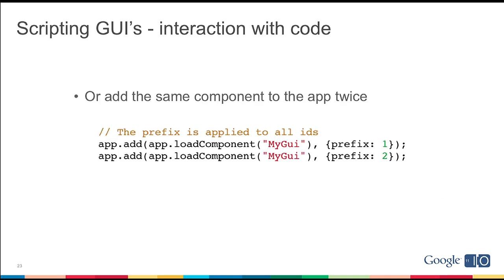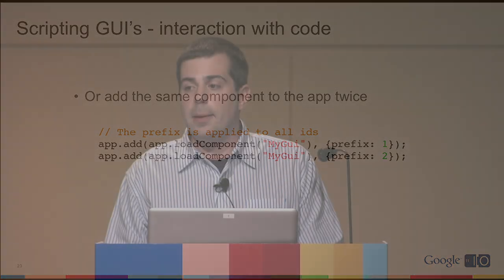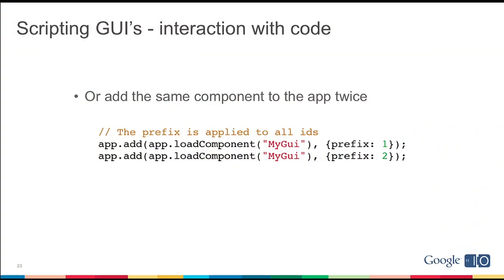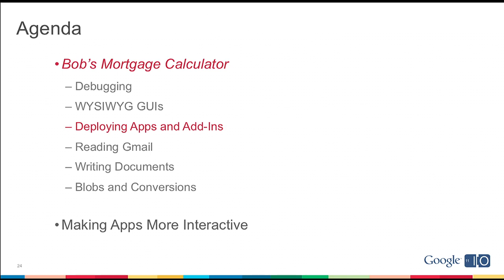Finally, you can add the same component to the app multiple times. This is how we achieve using that row as a template over and over again. Because every element in a UI app must have a unique ID, you can use the optional prefix property to set a prefix for each version you load in — no longer will there be just a calculate button, there will be one-calculate and two-calculate. Now we've built a UI for Bob's mortgage calculator. How can we get this application out to the world and deploy it?